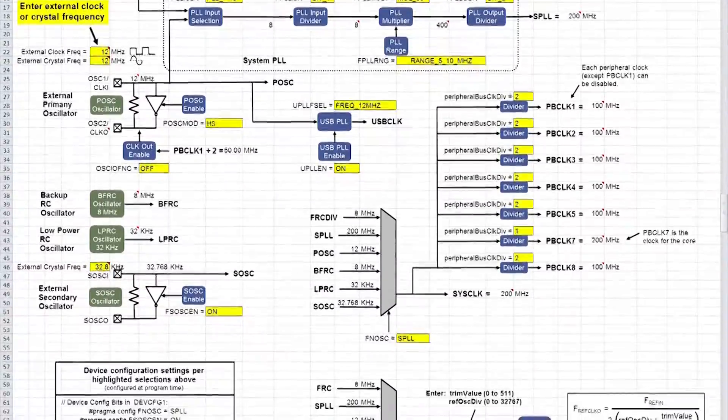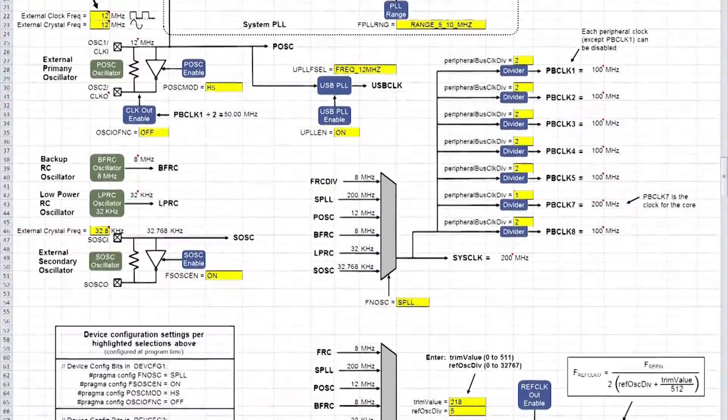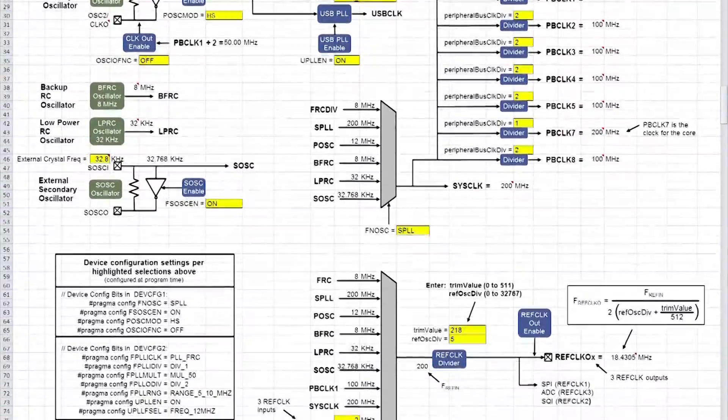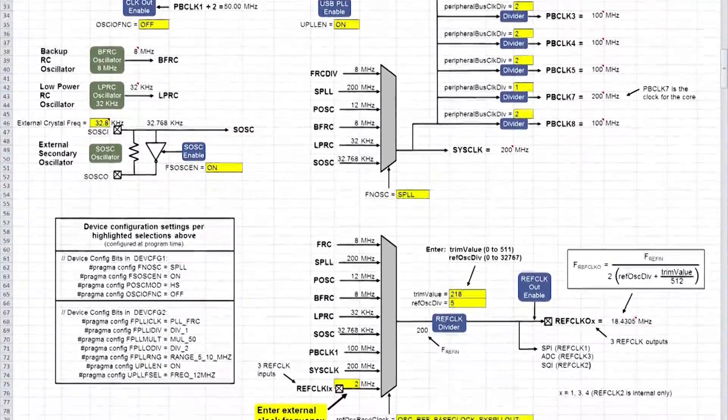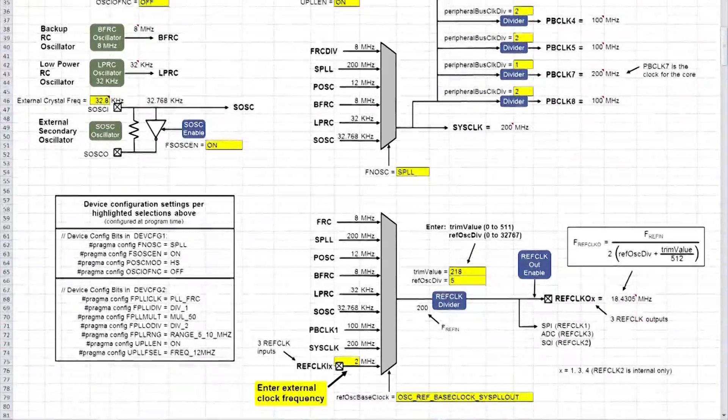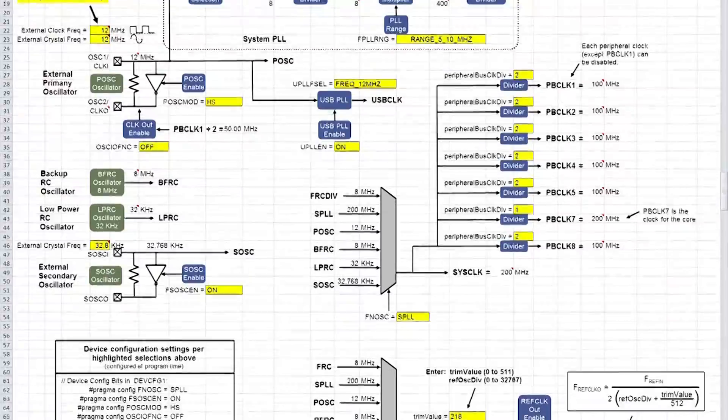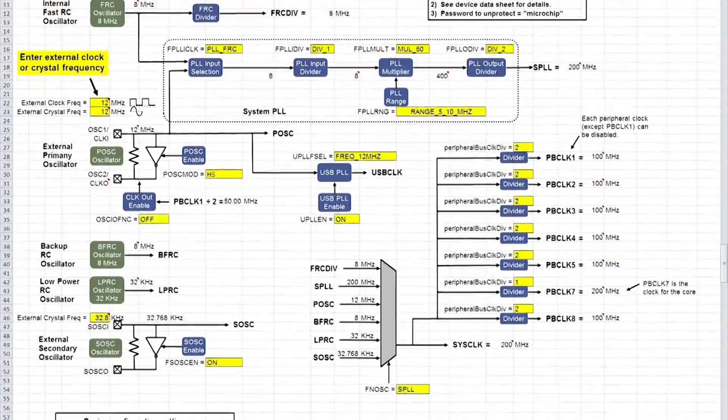The oscillator system on the PIC32 devices gives you lots of flexibility, but some configuration settings can be incompatible with others. This spreadsheet will not only provide you with the configuration settings for the oscillator system, but it will also highlight any incompatible settings for you.